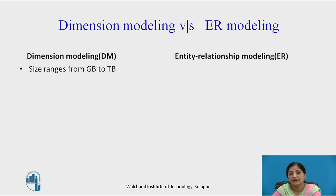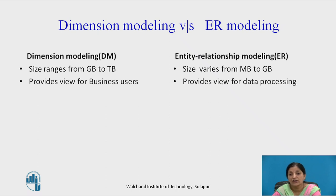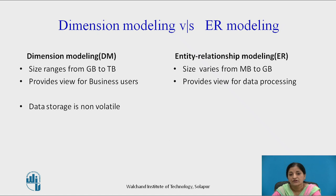The size of data in dimensional modeling ranges from gigabyte to terabyte, which is larger than the size of data in ER modeling, which ranges from megabyte to gigabyte. Dimensional modeling provides a view for business users, whereas ER modeling provides a view for data processing and data administration. Data storage in dimensional modeling is non-volatile, whereas in ER modeling it is volatile.